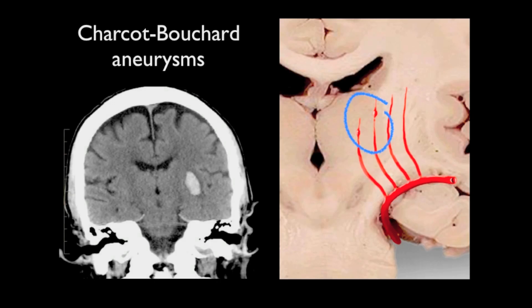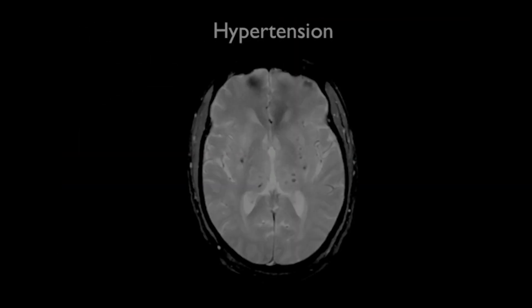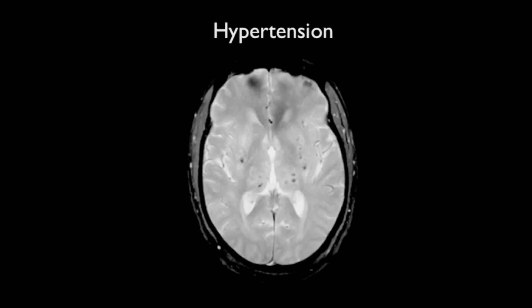The distribution of micro hemorrhages, acting as a surrogate for Charcot-Bouchard aneurysms, is seen on MRI with T2 star weighted imaging or susceptibility weighted imaging, as small regions of signal dropout typically seen in and around the basal ganglia in chronic uncontrolled hypertension.